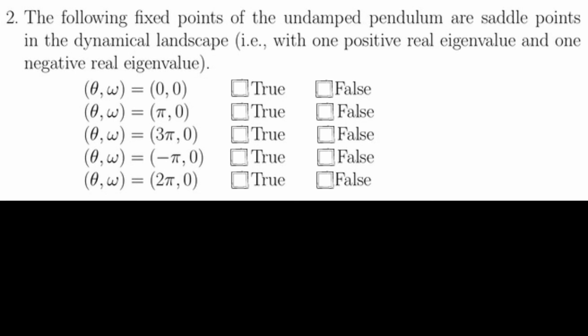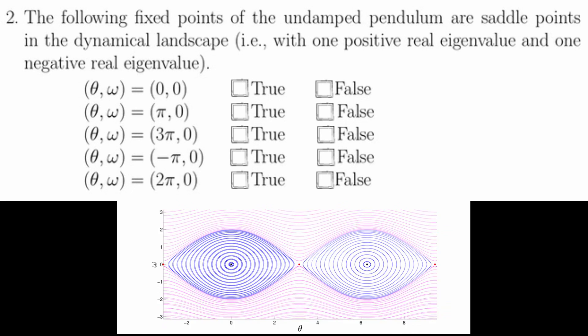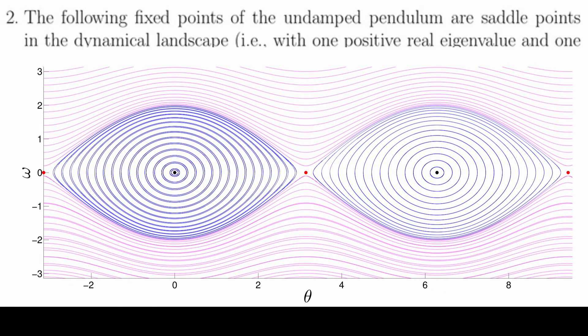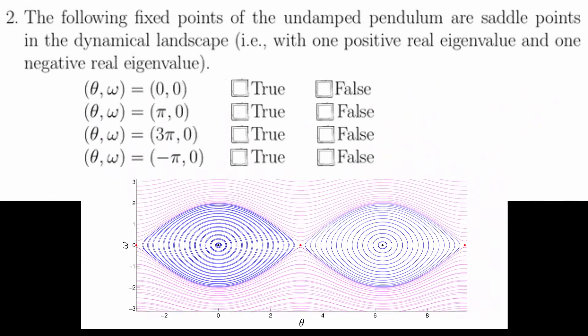Problem 2 asks us to identify which of the following fixed points of the undamped pendulum are saddle points in the dynamical landscape. The simple way to solve this problem is to remember that even multiples of pi like 0, 2π, 4π, etc. are elliptic fixed points, not saddle points.